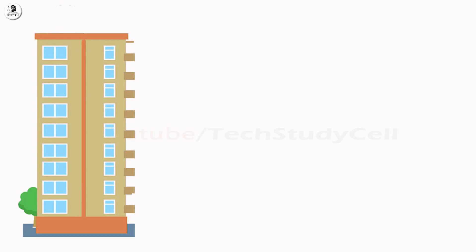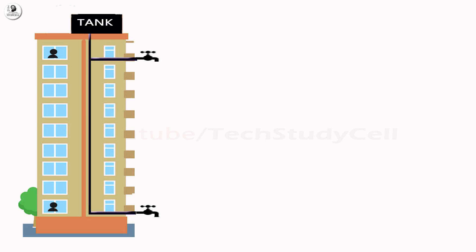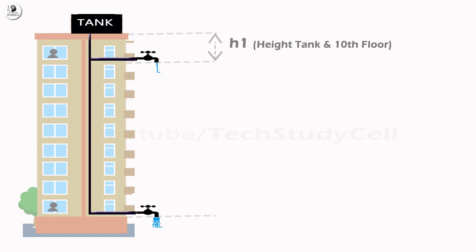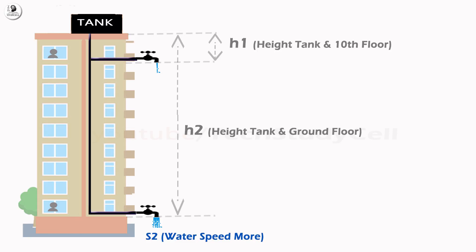Let's assume there is a 10-story building. I stay on the 10th floor, you stay on the ground floor. Now, like every building, there is a water tank and the width of the pipeline is the same. If I open the tap from the 10th floor and you open the tap from the ground floor, in which case will the speed of the water be more? As I stay on the 10th floor, the height between the overhead tank and the 10th floor tap is less than the height between the overhead tank and the ground floor tap. So, the speed of the water coming out from the ground floor tap is more than from the 10th floor tap.